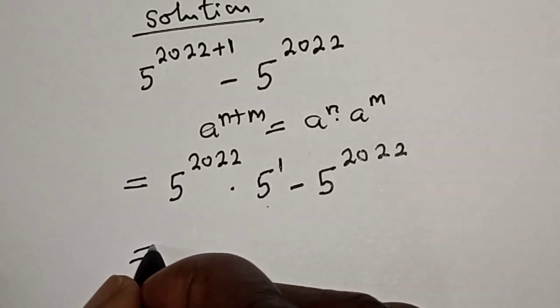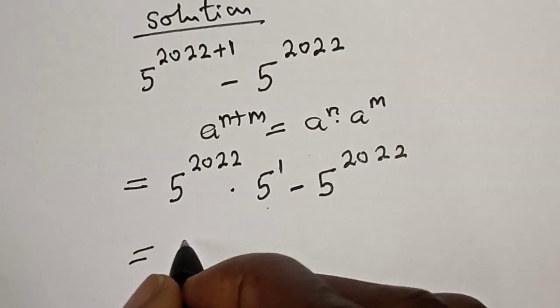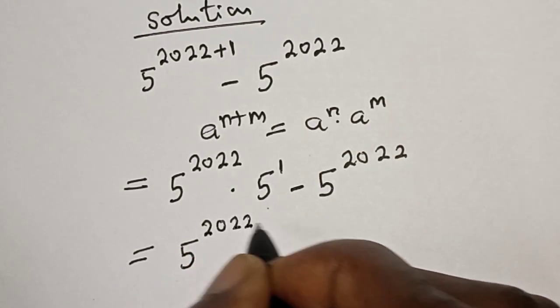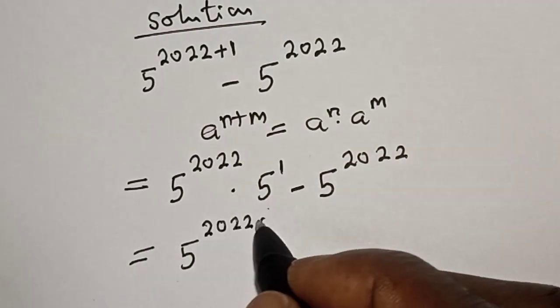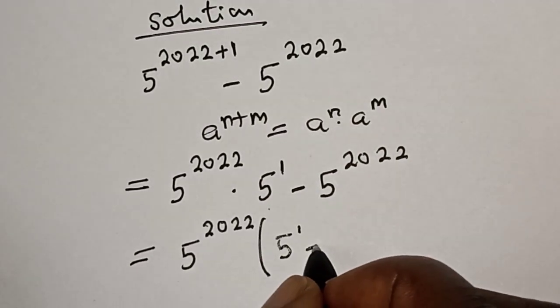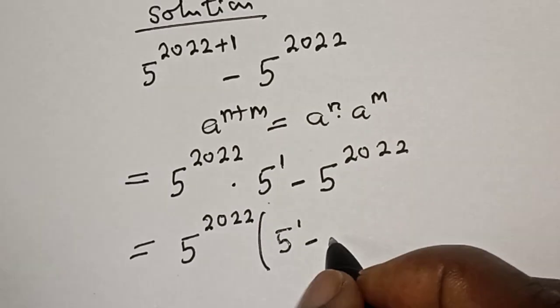This equals 5 raised to power 2022 is common. Let's factor it out: 5 raised to power 2022 times the quantity 5 raised to power 1 minus 1.